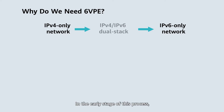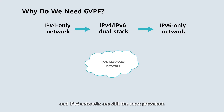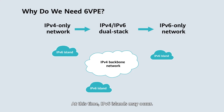In the early stage of this process, IPv6 networks are not widely deployed, and IPv4 networks are still the most prevalent. At this time, IPv6 islands may occur.